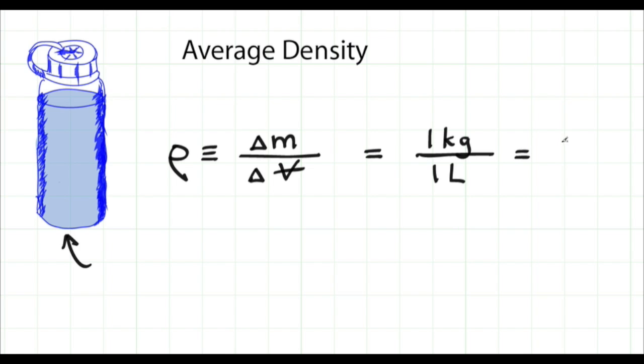The volume is one liter. Therefore the density of water is one kilogram per liter.